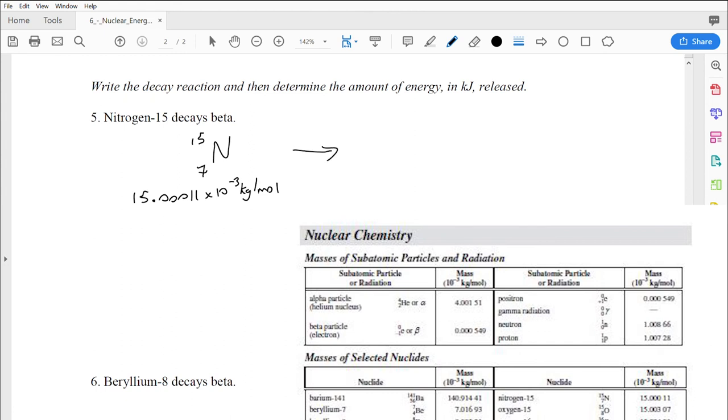Now when you make a beta decay, you form a beta-negative particle. That beta-negative particle is also on your data sheet. It can have a little e for its symbol, or it can have the beta symbol.